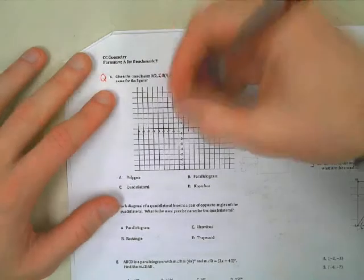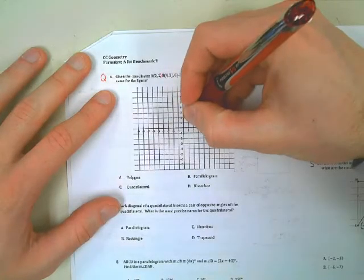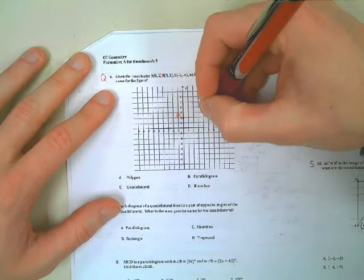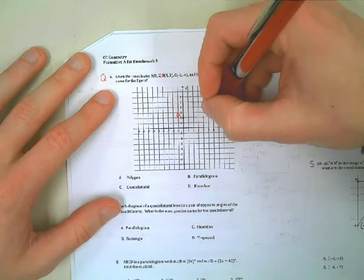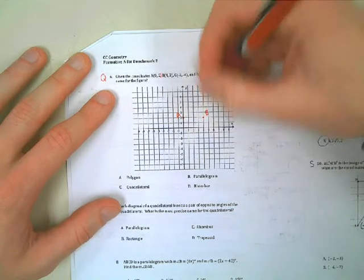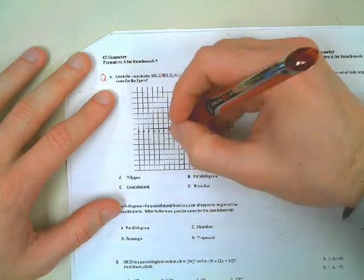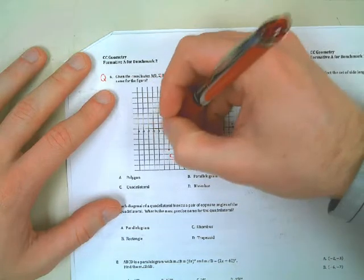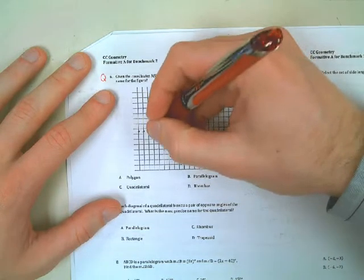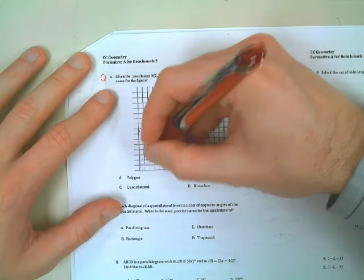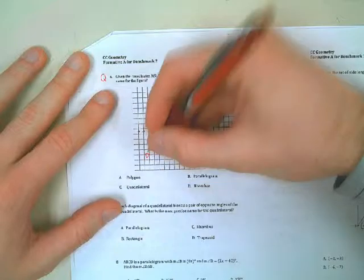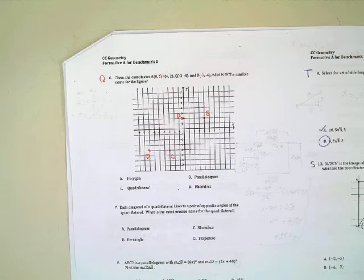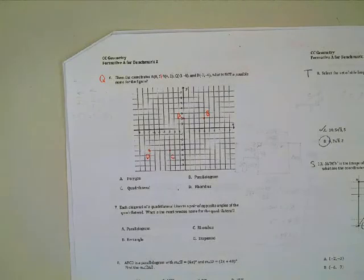So let's graph this. A is at (0,2) — make sure you graph it accurately, too, because otherwise it could be big trouble. And then D at (-7,-4). All right, so I've plotted my points.